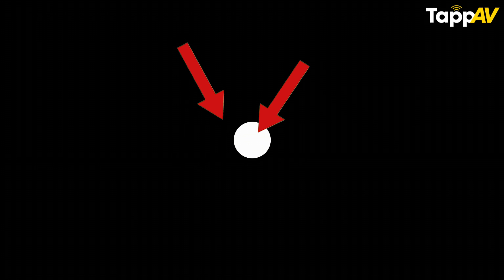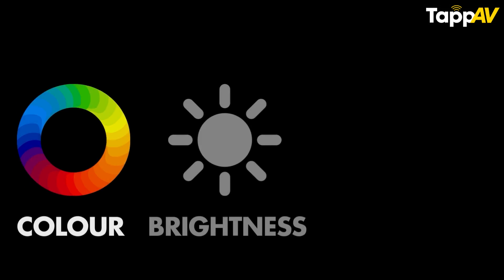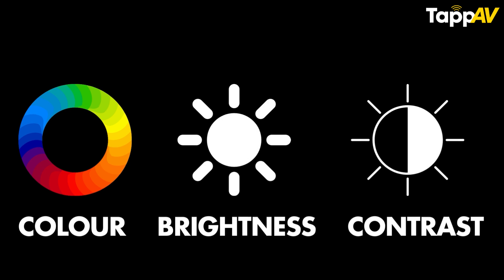The last important factor is contrast ratio. Contrast ratio is the ratio between the brightest white and the darkest black on that screen. So these are the three main factors — colors, brightness, and contrast ratio — that are really going to determine how good your video quality is.